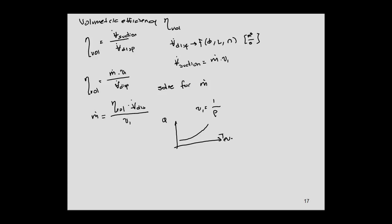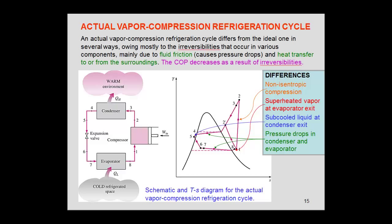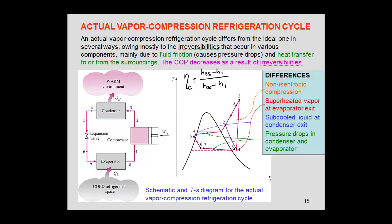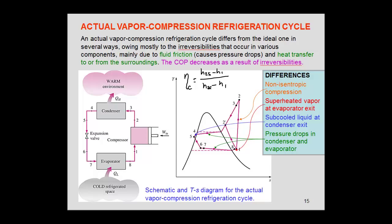Finally, to summarize the actual cycle, we need to account for the non-isentropic compression. The isentropic efficiency is defined as (h2s minus h1) divided by (h2_actual minus h1), where h2s is the isentropic enthalpy and h2_actual is the real enthalpy after compression. Any combination of these conditions — pressure drop, superheat, subcooling, non-isentropic compression — makes the cycle an actual cycle. Thank you very much.